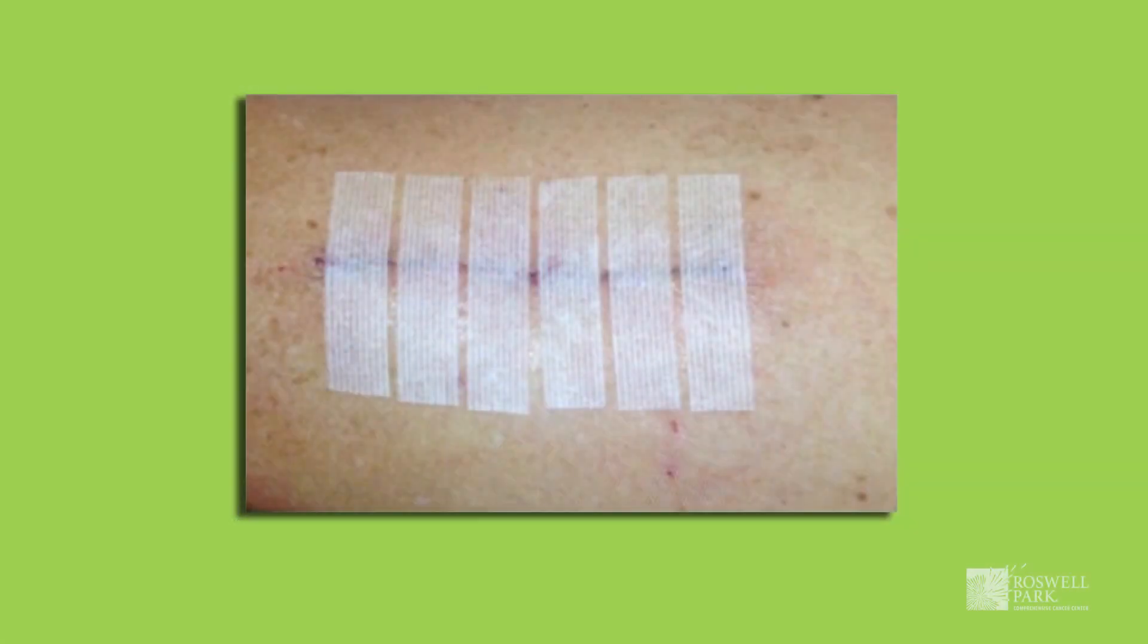Finally, after we put the stitches in and the wound is closed, oftentimes we'll put steristrips, little strips that go across the wound to help re-approximate the superficial layers, and those will stay on until they fall off spontaneously on their own.